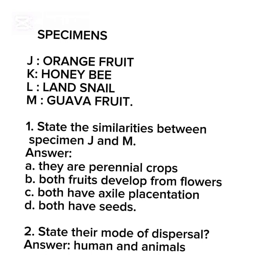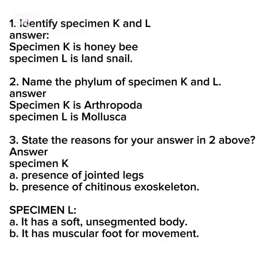Question two: state their mode of dispersal — answer, by humans and animals. Identify Specimen K and L: Specimen K is a honey bee; Specimen L is a land snail.